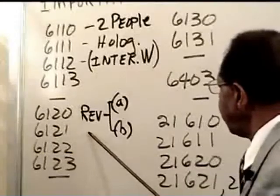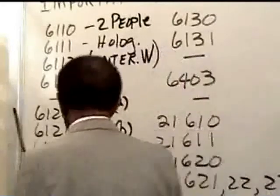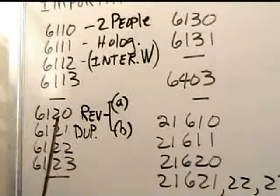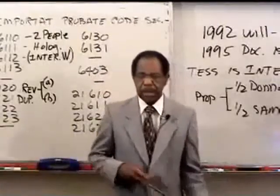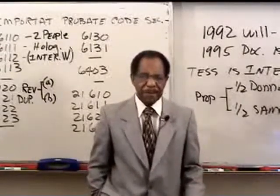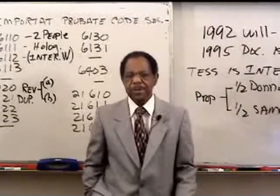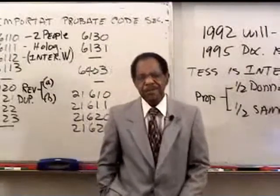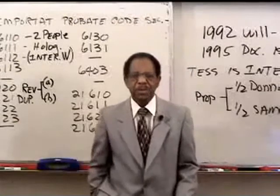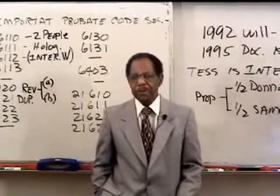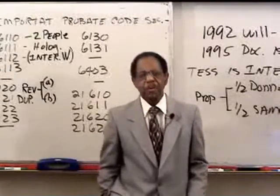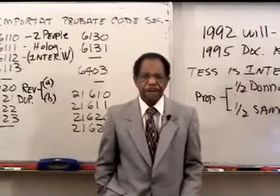Section 6120 is the revocation section. Section 6121 is the code section dealing with duplicate originals — duplicate wills. If you write a will, the person signs it, and then you make copies, those are just copies — evidence of what the will says. But if the person signs several of them separately, those are considered duplicate originals, and each is probatable. If you revoke one of the duplicate originals, that revokes them all.